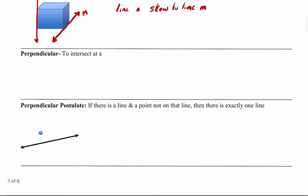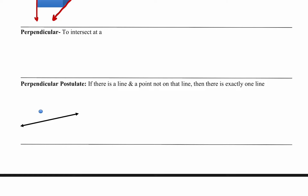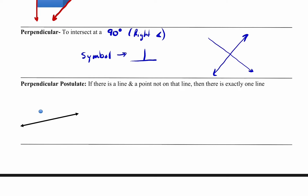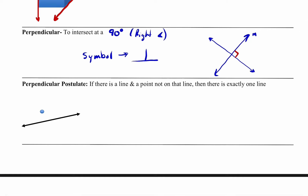Now we're going to talk about some intersections. The first one is perpendicular — when two lines intersect at a 90-degree or right angle. The symbol is an upside-down T. Visually, if you have two lines, they're going to meet at a right angle, and when we put a little square in the corner, that indicates a right angle. So if this is M and this is N, we could say that line M is perpendicular to line N.